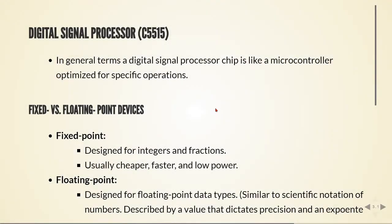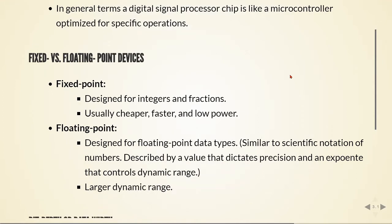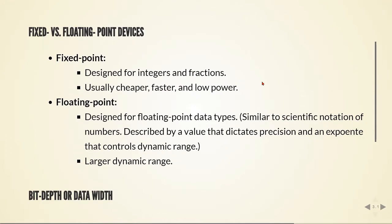The digital signal processor in this board is the C5515. If you're not familiar with a digital signal processor chip, it's something like a microcontroller but optimized for specific operations. A digital signal processor can be a fixed point or a floating point device. The fixed point device is designed for integers and fractions — it's usually cheaper, faster, and has low power. The floating point devices are designed for floating point data types, they have a larger dynamic range, but in comparison to the fixed point devices they are more expensive and use more power, and sometimes they are slower.